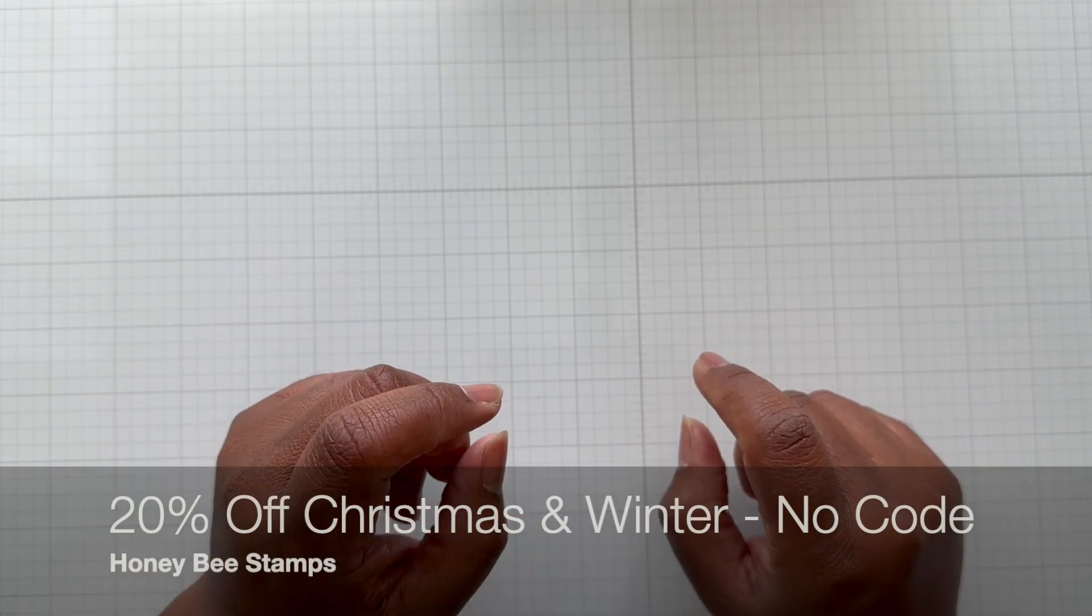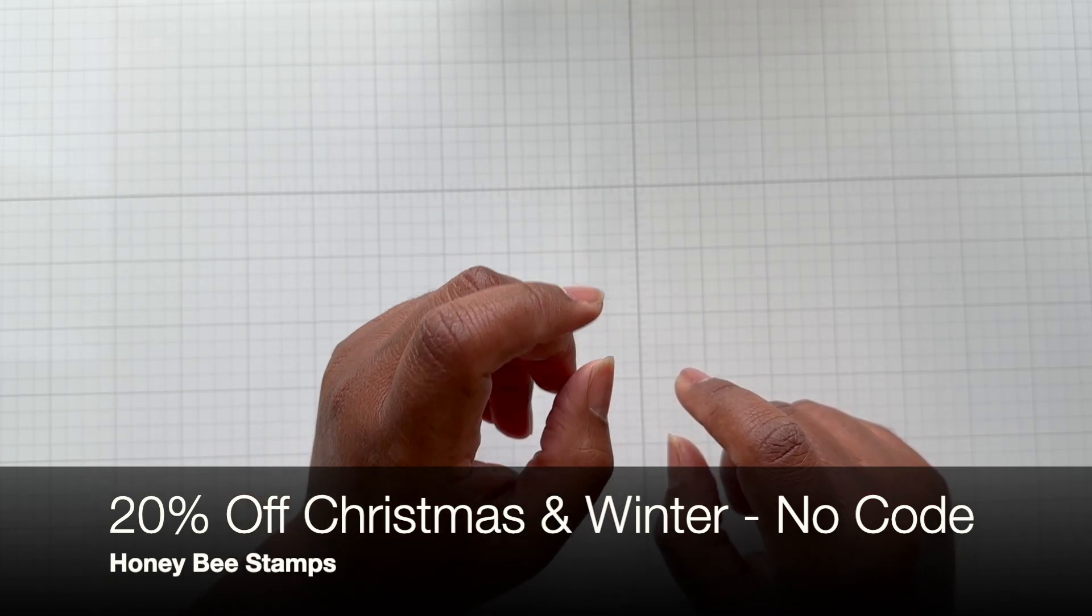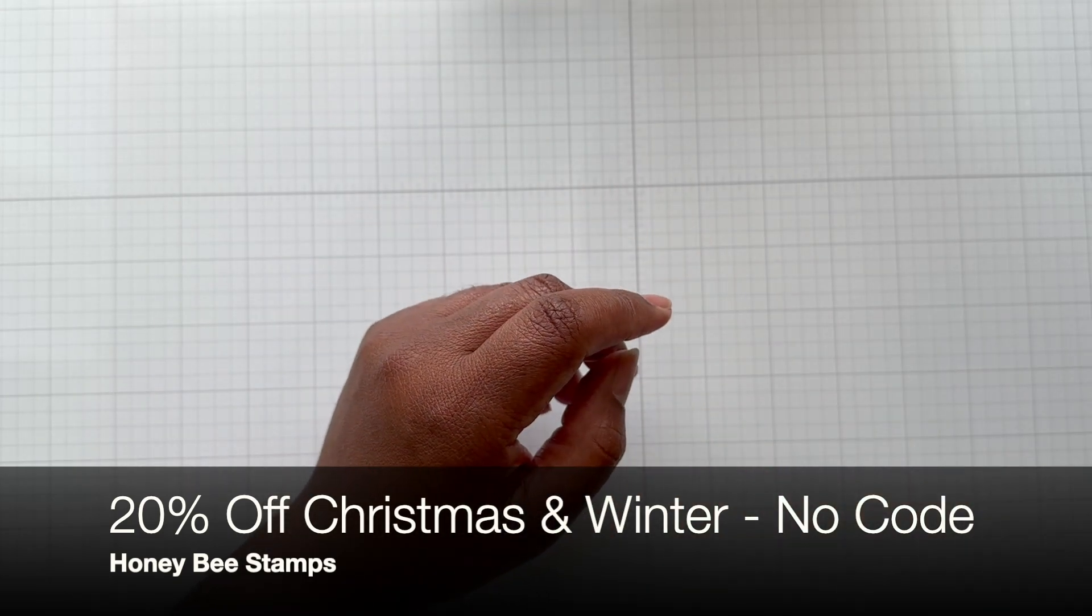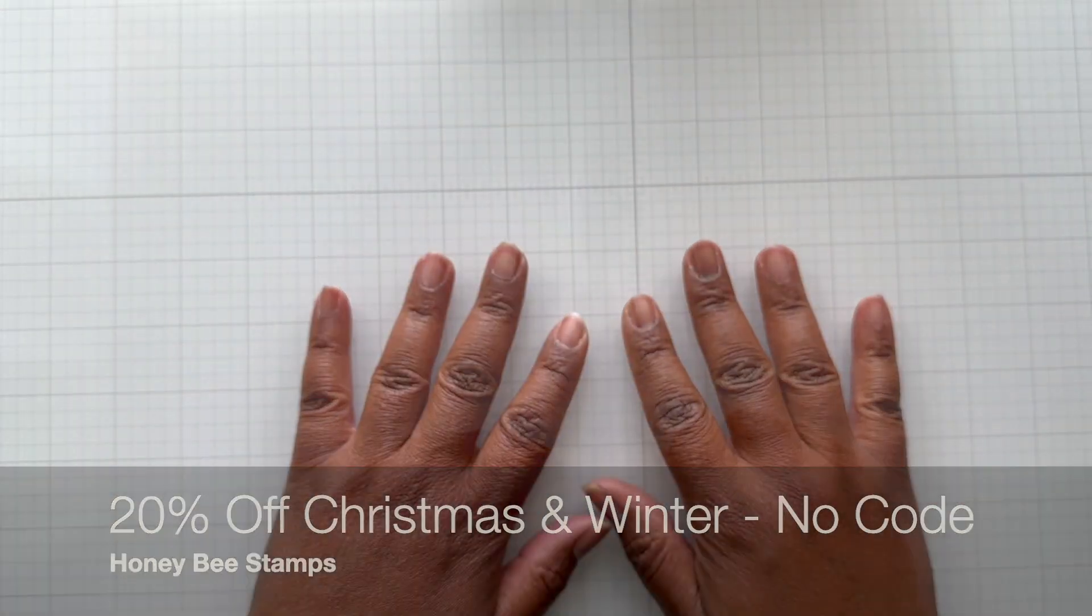Next, Honey Bee. Honey Bee has 20% off all Christmas and winter, plus red and green items and clearance. Add them to the cart, no code needed. Easy peasy.